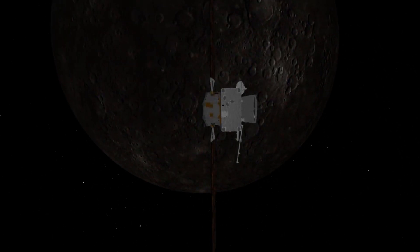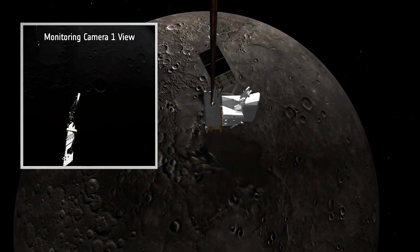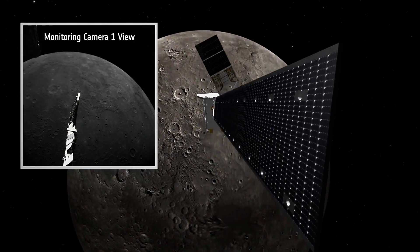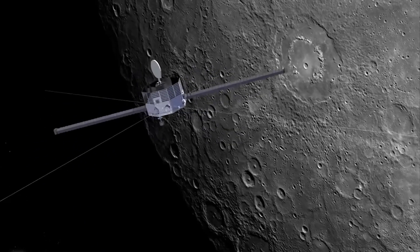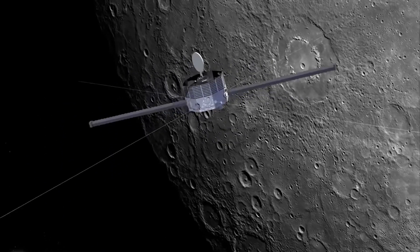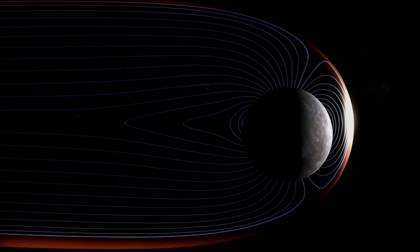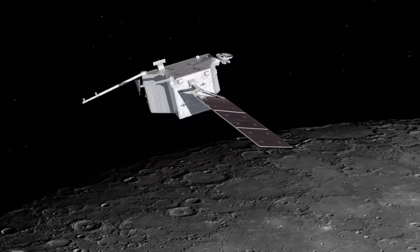Yet BepiColombo, this sleek European-Japanese marvel, dares. Armed with ion thrusters and a heat shield stronger than myth, it's mapping Mercury's magnetic whispers. A magnetic field, tiny, just 1% of Earth's strength, but there - a heartbeat, proof that even a dead world has a pulse.